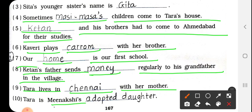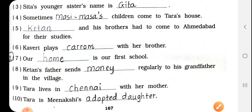Number 10: Tara is Meenakshi's Dash. Tara है वो Meenakshi की क्या है? तो वो adopted daughter है. We have to write here: Adopted — A-D-O-P-T-E-D — Daughter — D-A-U-G-H-T-E-R. Adopted daughter मतलब गोदली हुई बेटी है Meenakshi की.